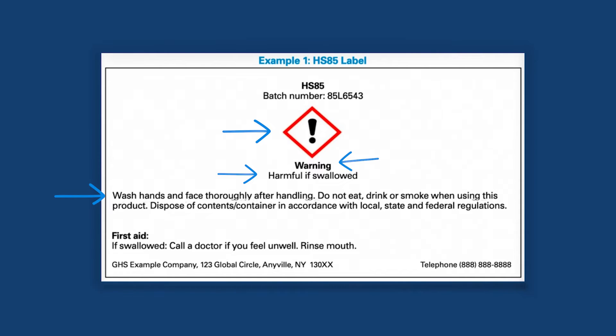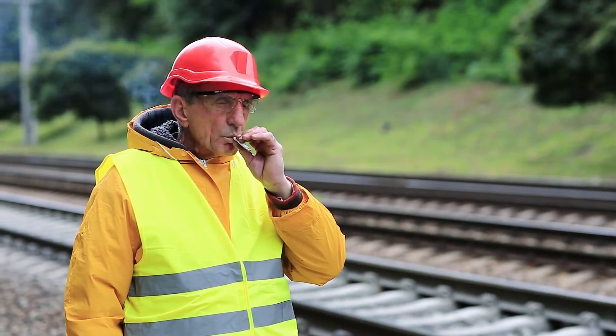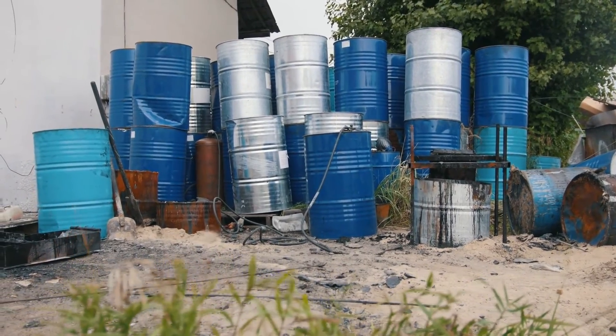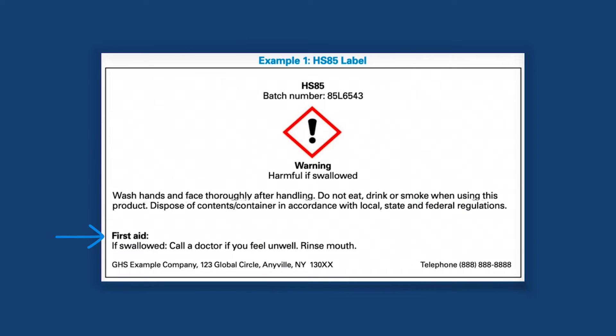Following that, we see the precautionary statements. These include instructions like washing hands and face thoroughly after handling the chemical, not eating, drinking, or smoking when using the product, and disposal instructions to comply with local, state, and federal regulations. Then we have the first aid instructions in case someone swallows this chemical — call a doctor if you feel unwell and rinse your mouth. Lastly, the supplier information tells us who made or distributed the product and how to get in touch with them. This label is a fairly common example of what you might see in your day-to-day work with less hazardous chemicals.